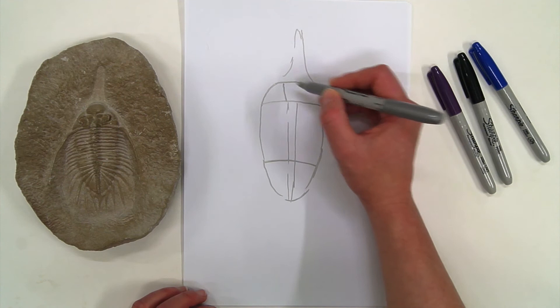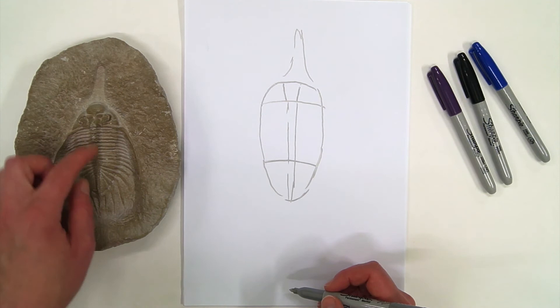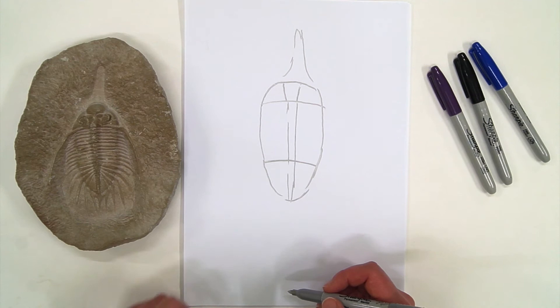And you would actually count those segments as well to add to it. So I already got the overall shape. And I'll count the segments, draw them in, and then draw in all the additions.